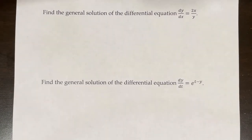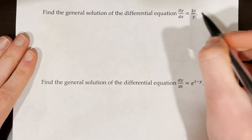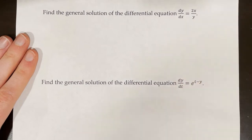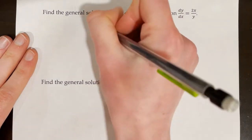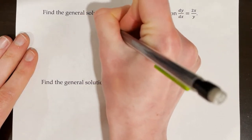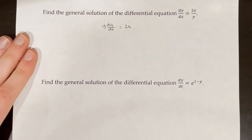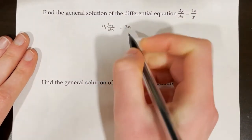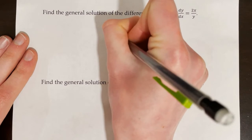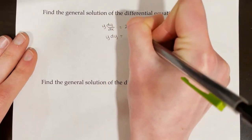Find the general solution of dy/dx = 2x/y. The first thing we do is move all terms with y to the left and all terms with x to the right. First multiply both sides by y to get y·dy/dx = 2x. Then multiply both sides by dx to get y·dy = 2x·dx.